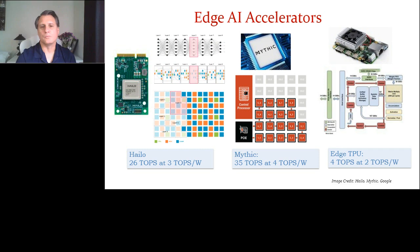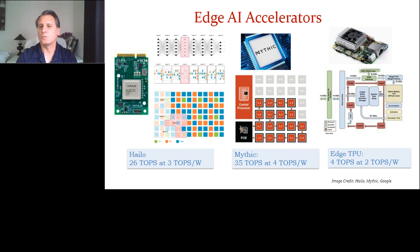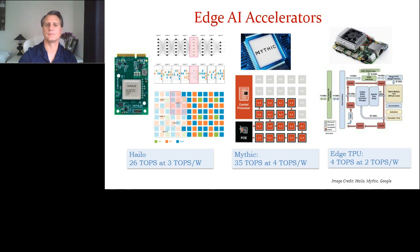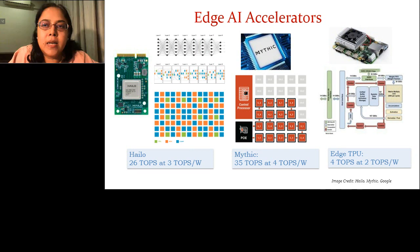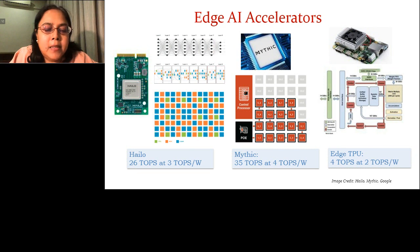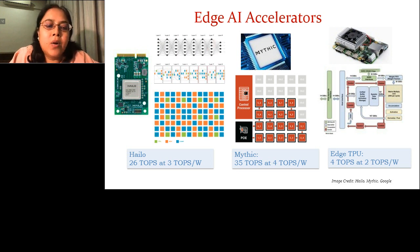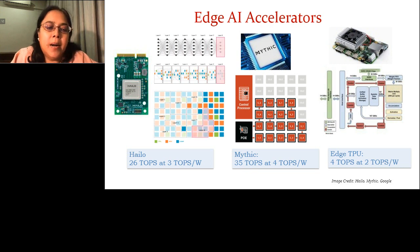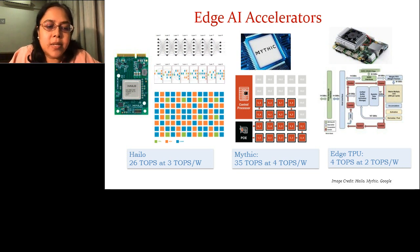With the ever-increasing packing of multi-functions into a single chip, will we ever see a time when Moore's Law will not apply? Yes, it's already happening — we are almost reaching the end of Moore's Law. In the post-Moore's Law era, we are not going to have as many transistors as we want, so it becomes important to use the transistors we have much more efficiently.